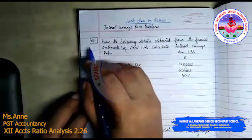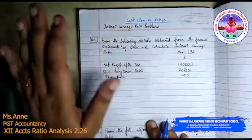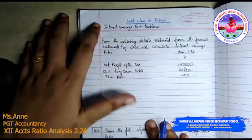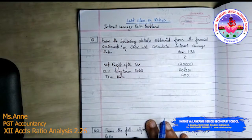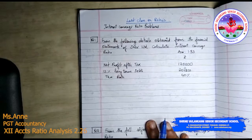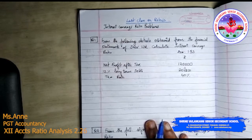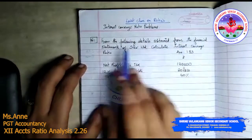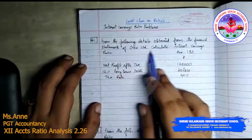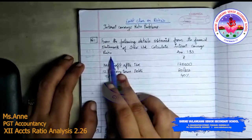Question number one: Interest Coverage Ratio. We are going to discuss the problems related to interest coverage ratio. The formula is EBIT divided by interest — profit before interest and tax, or earnings before interest and tax, divided by interest. From the following details obtained from the financial statement of Jeeb Limited, calculate interest coverage ratio.